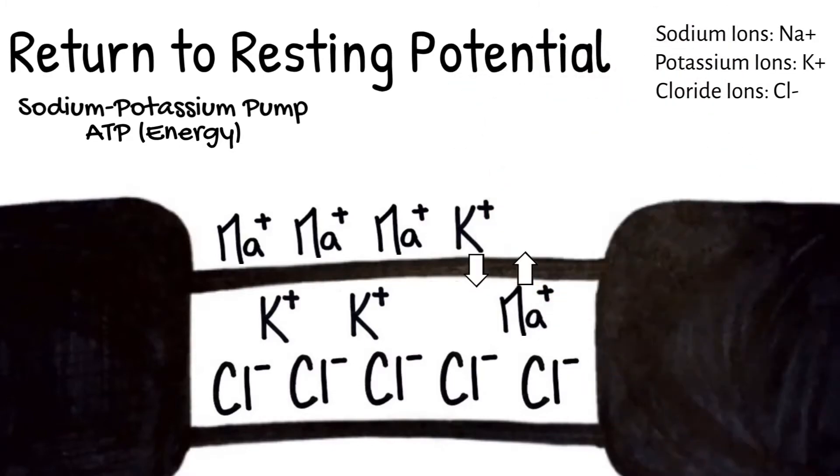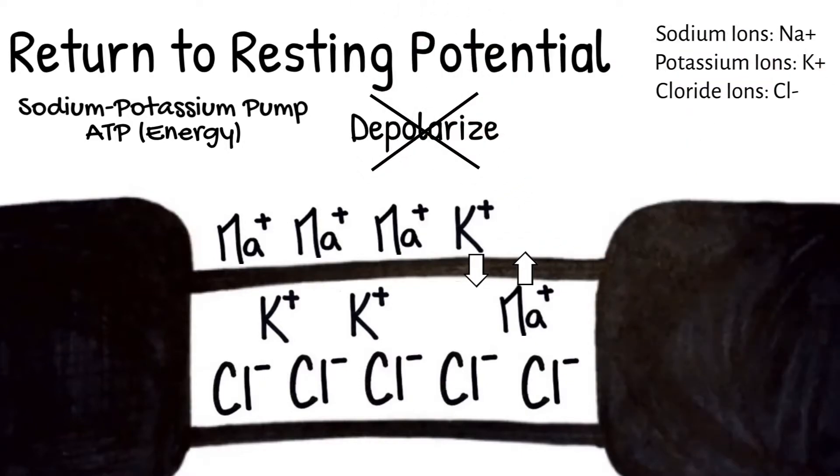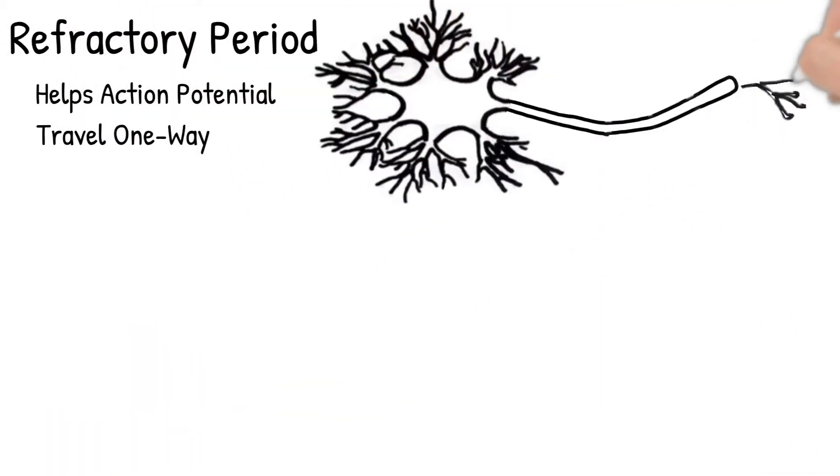While the sodium-potassium pump is moving those ions to their proper place, this section of the axon cannot depolarize. This is called the refractory period. This helps the action potential travel one way through the axon.